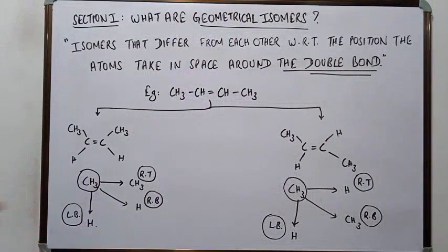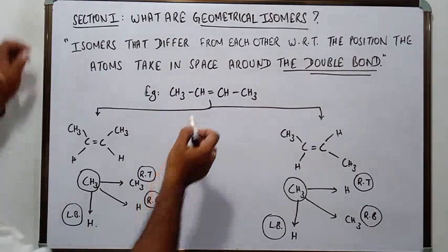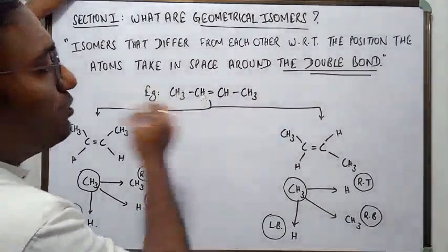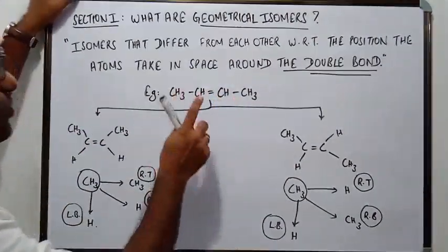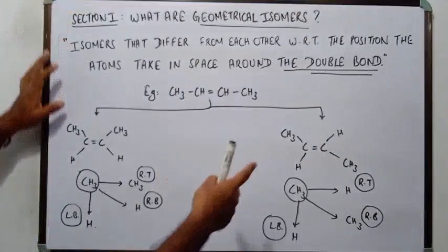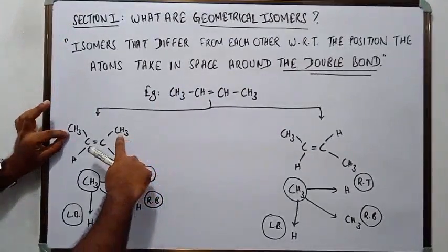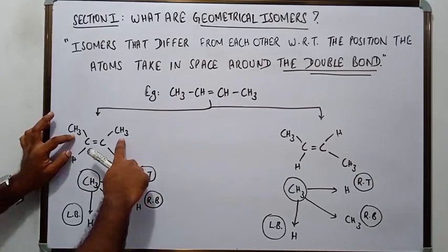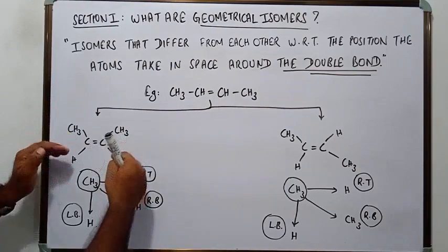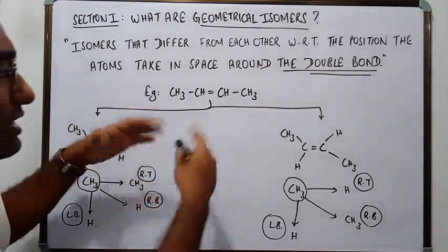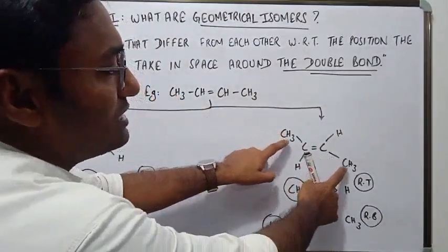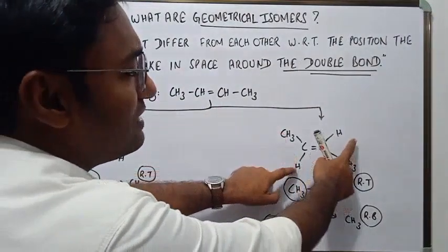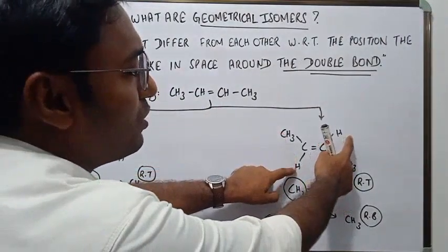To understand the definition better, let us take the example of 2-butene. 2-butene can exist in two ways. In one possibility, the same groups are on the same side of the plane — the CH3 groups are on one side and the H groups are on the other side. In the second possibility, the same groups are on opposite sides of the plane — the two CH3 groups are on opposite sides, and the two H groups are also on opposite sides.